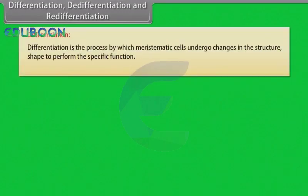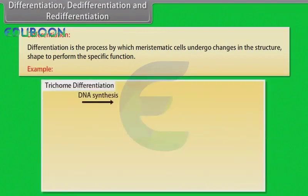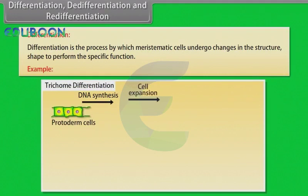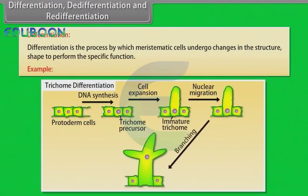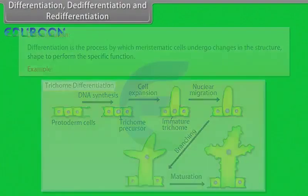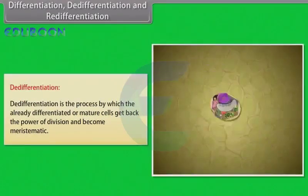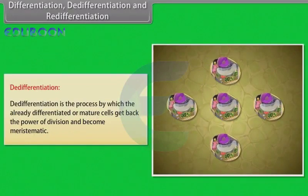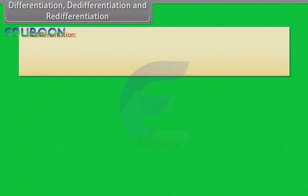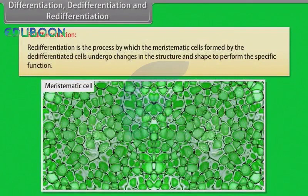Differentiation is the process by which meristematic cells undergo changes in structure and shape to perform specific functions. For example, after DNA synthesis of protoderm cells, cell expansion takes place and it forms an immature trichome; then nuclear migration and branching occur and it reaches maturation stage. De-differentiation is the process by which already differentiated or mature cells get back the power of division and become meristematic. Re-differentiation is the process by which meristematic cells formed by de-differentiated cells undergo changes in structure and shape to perform specific functions.